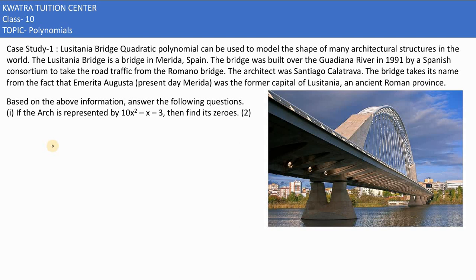This is a case study based question. A quadratic polynomial can be used to model the shape of many architectural structures. In many architectures we make use of quadratic equations. They are saying if the arc is represented by 10x² - x - 3, as you can see this is a parabola.